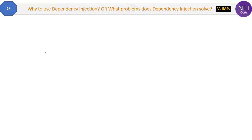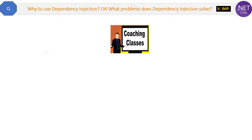I am not going to use the word 'inversion of control' here because I think that will make it more difficult for a beginner-level developer to understand. So let's start with an example of why we need dependency injection. Suppose you are working on a project for an institution that provides coaching classes, and right now they are focusing on math classes only.